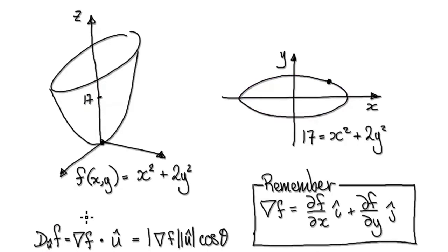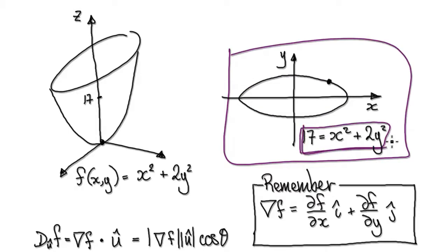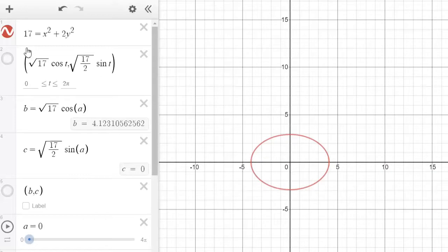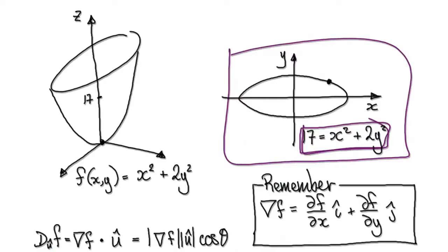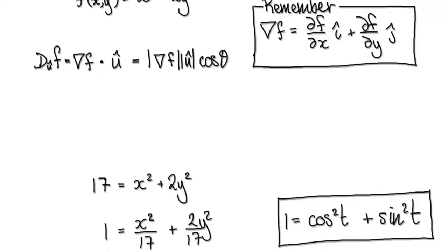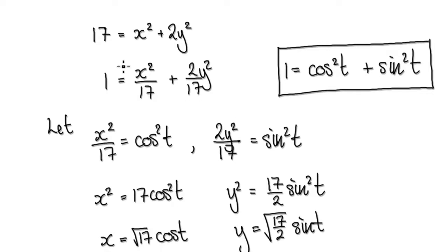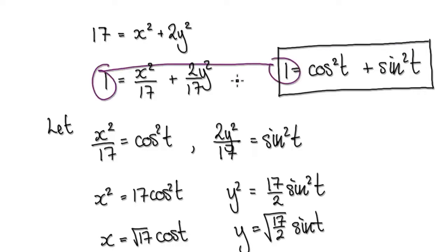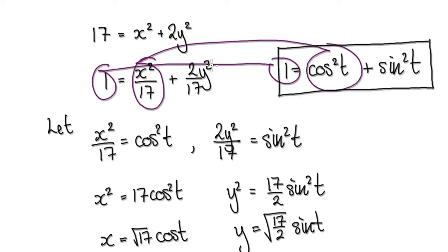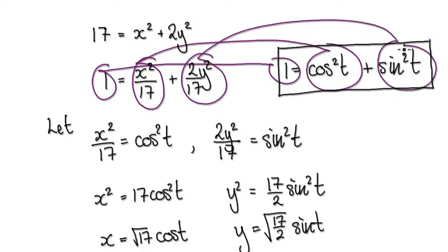Let's get this working in Desmos. Punch the surface and level curve into Desmos — that will give us this ellipse. Now we need to convert this ellipse into its parametric form. Starting at the ellipse, divide everything by 17, and remember 1 equals this squared plus this squared.